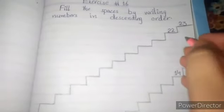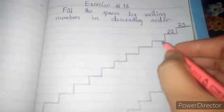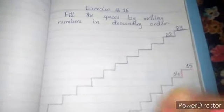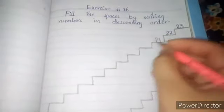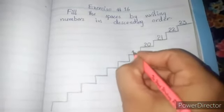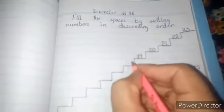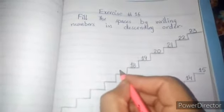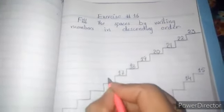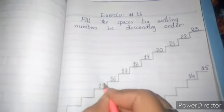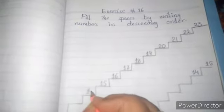There is 23 and 22. We will come down because this is our descending order. 23, before will come 22. 22 before will come 21. 21 before 20. Before 20 will come 19. 19 before will come 18. 18 before will come 17, 16, 15, 14, 13.